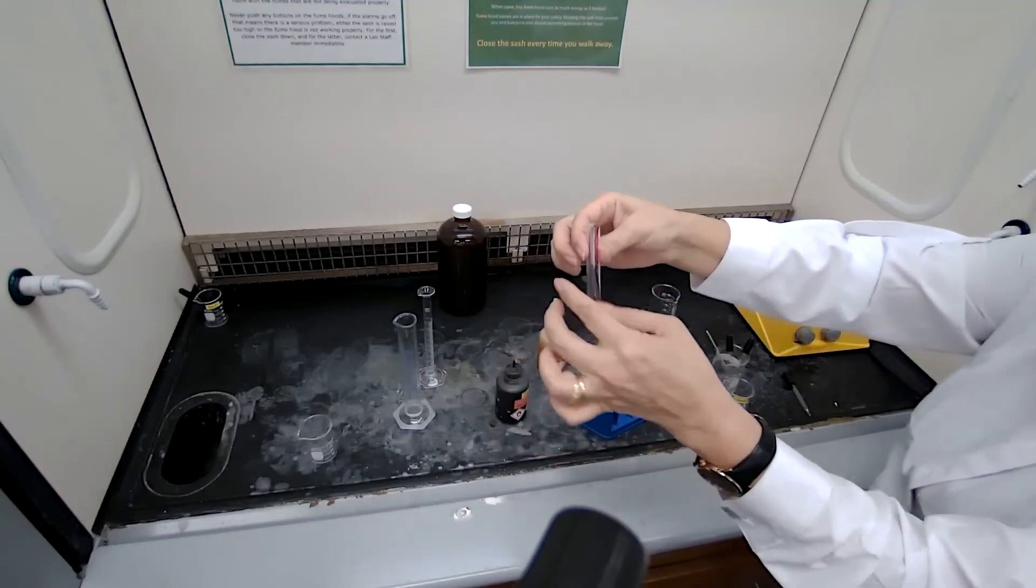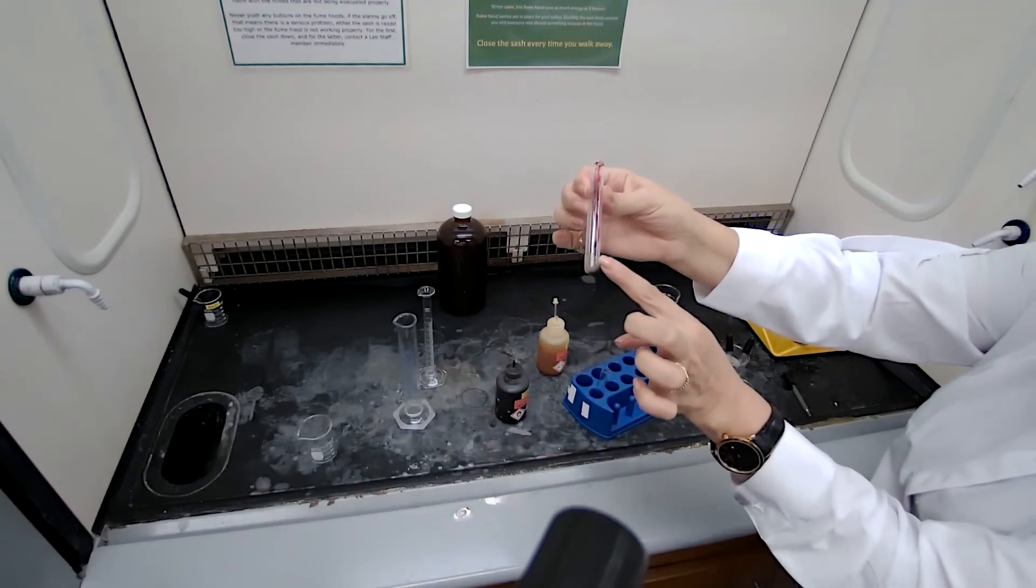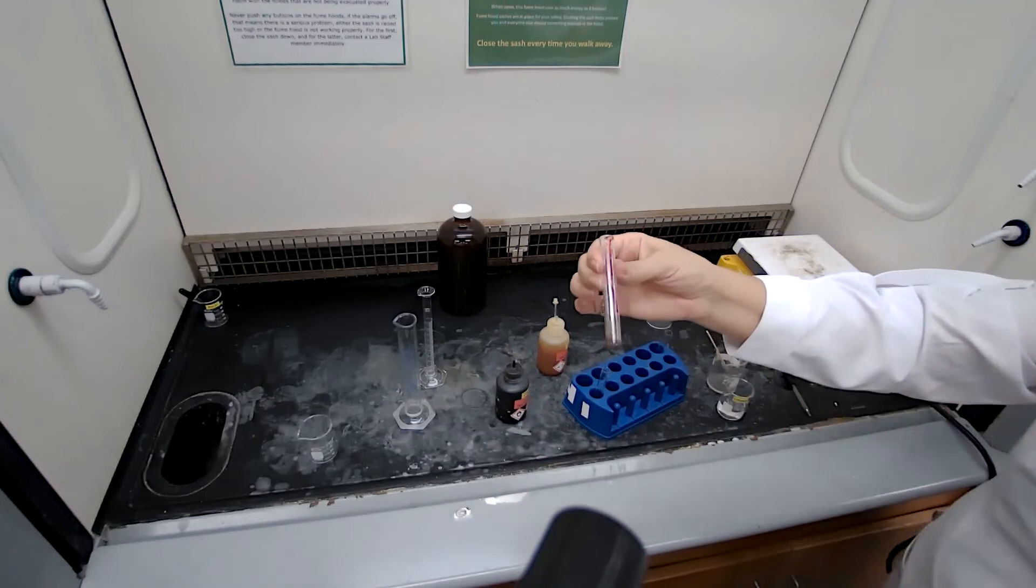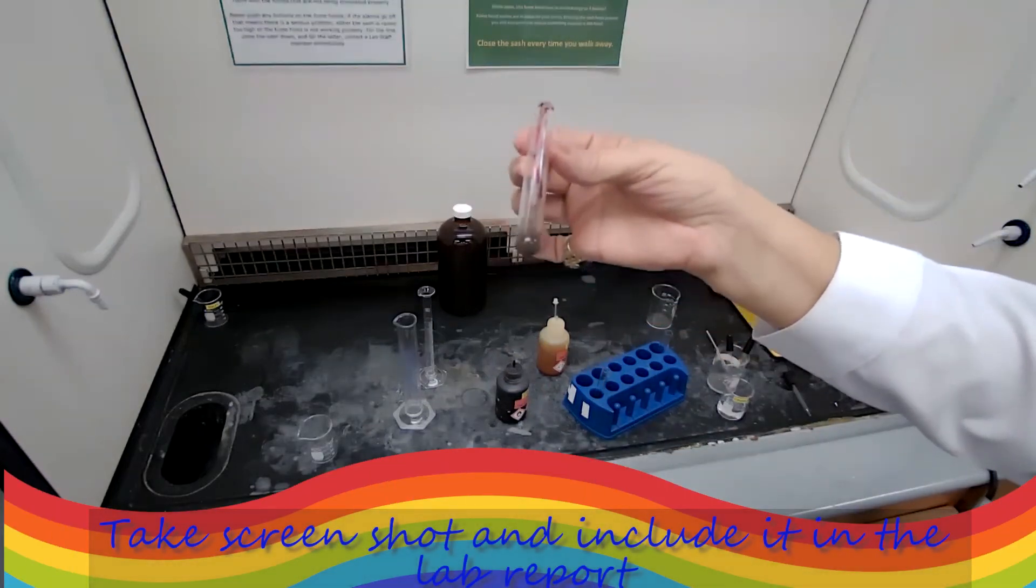See the blue purple color of permanganate? As it's touching the sample, it disappears and it gives like a brown color, brown precipitate there.